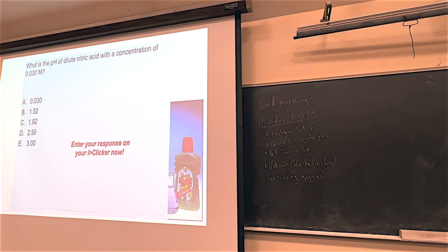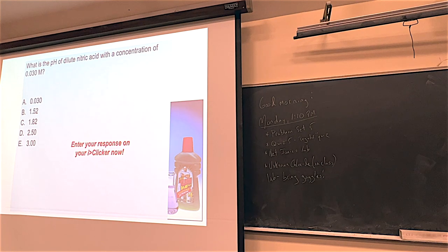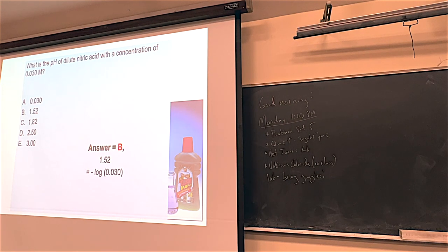Here's another question: let's say you have a concentration of a nitric acid solution of 0.030, and you want to know what the pH is. For strong acids, their concentration equals H+. So for this problem, you go minus base 10 log of 0.030. The pH you get should be less than 7 - this is an acid, not a base. If you do that calculation, you get 1.52.